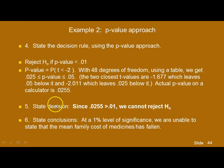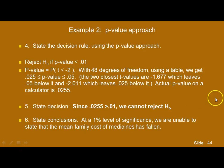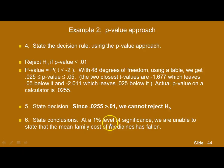Since 0.0255 is not less than 0.01 — it's greater than 0.01 — we are unable to reject the null. Again, we get the same decision and conclusion as before, just using a different decision rule. At a 1% level of significance, we're unable to state that the mean family cost of medicines has fallen.